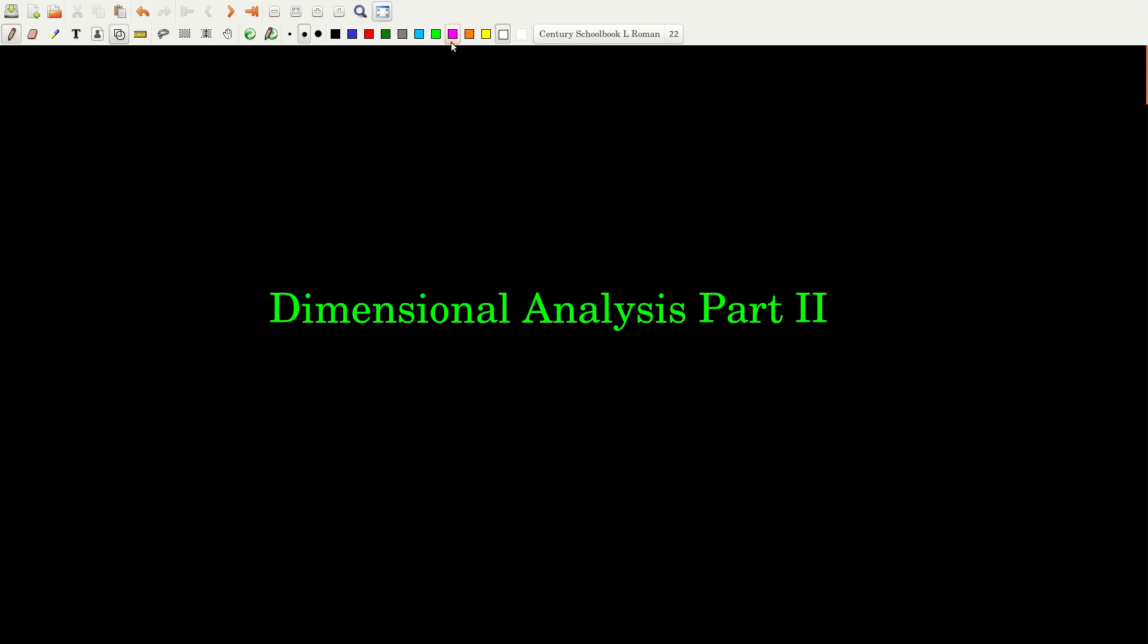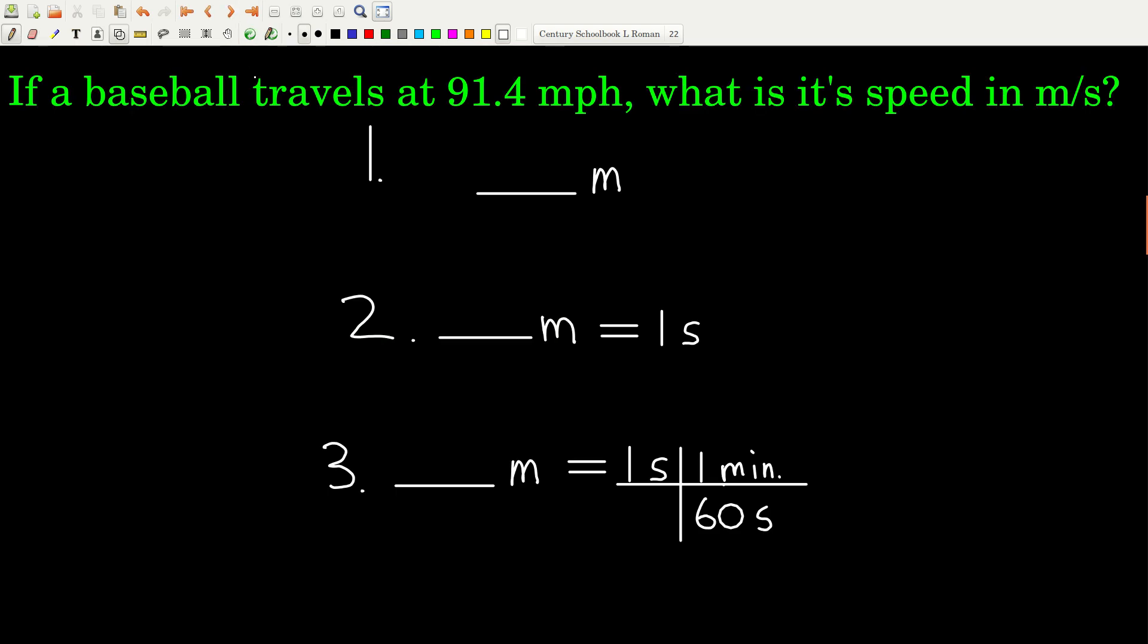This video will be dimensional analysis part two, looking at more ways of using this useful tool to solve problems in chemistry and other areas. We're going to use an example to illustrate this application of dimensional analysis. Let's say we have a baseball traveling at 91.4 miles per hour. We want to find its speed in meters per second.